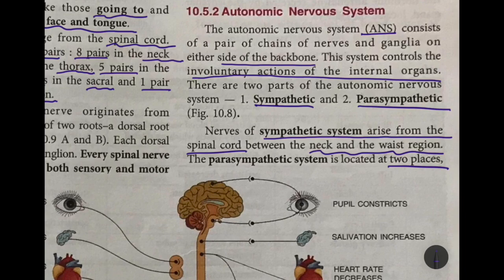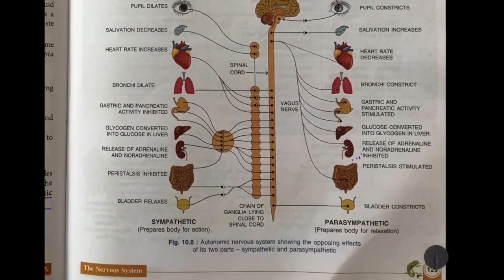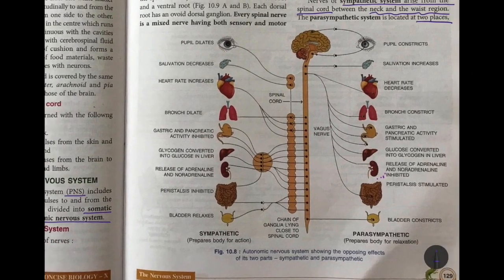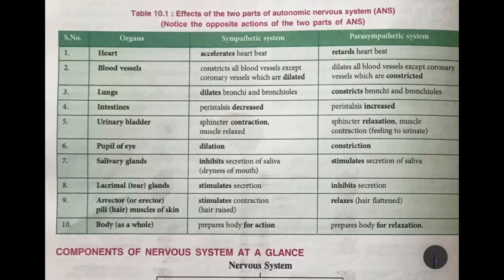These two parts are opposite to each other. The sympathetic nervous system is stimulated by the hormone adrenaline, which is secreted by the adrenal glands located on the kidneys. In summary, the sympathetic prepares the body for action and the parasympathetic prepares the body for relaxation.